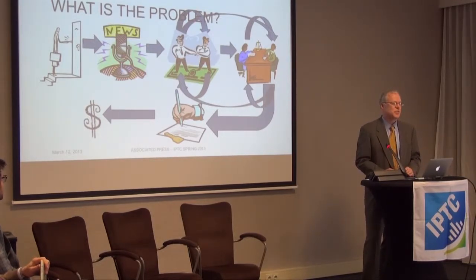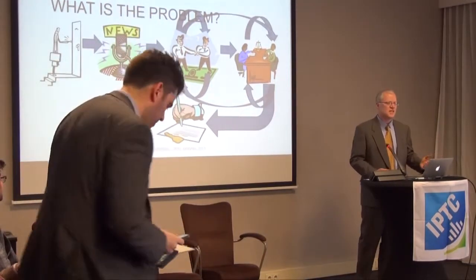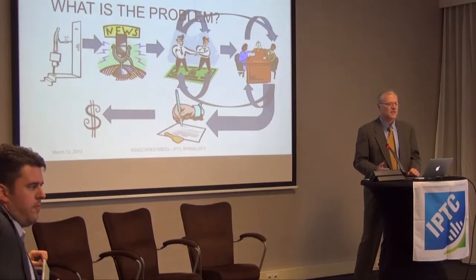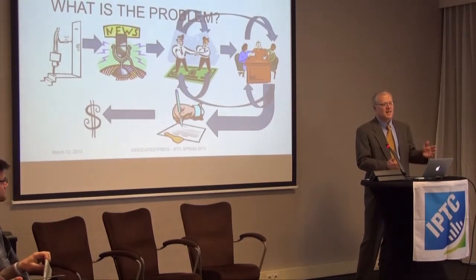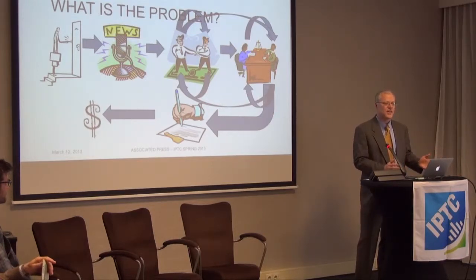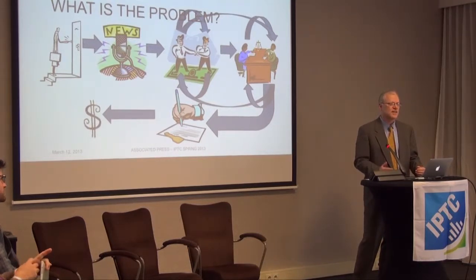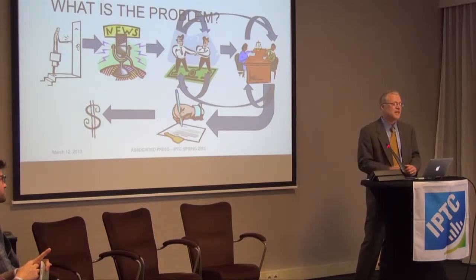This is a very inefficient process. It makes sense in the context of a larger news organization like AP working with another large organization like the BBC, CNN, or the New York Times, where we want to communicate a very specific set of rights and restrictions, and they want to acquire a very specific content set. Both organizations are willing to invest the effort in this rather complicated process to make sure that it all works properly.